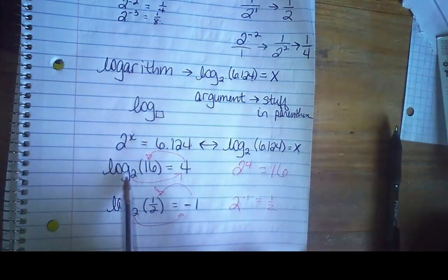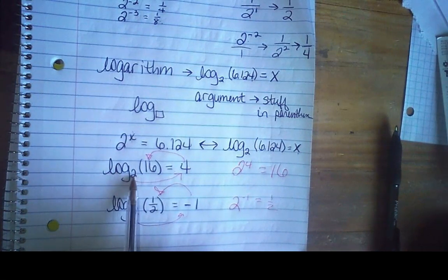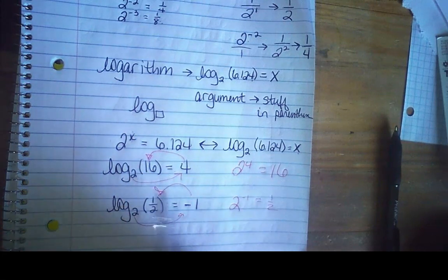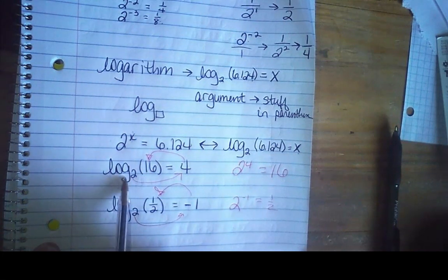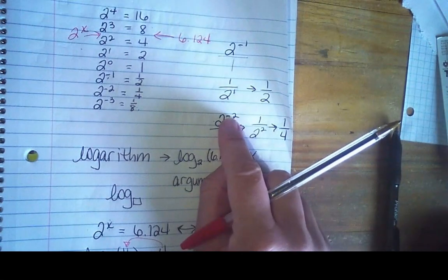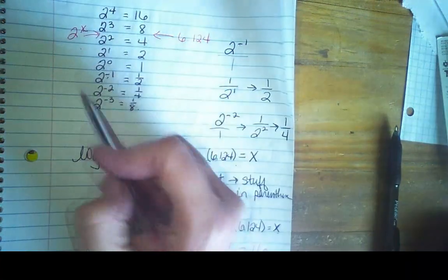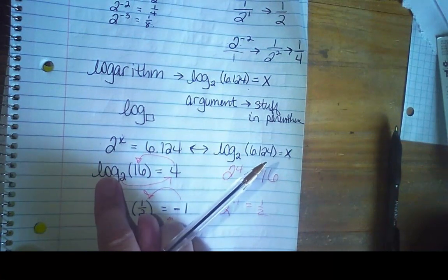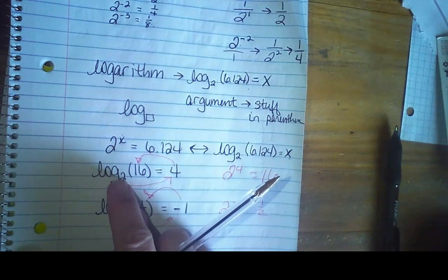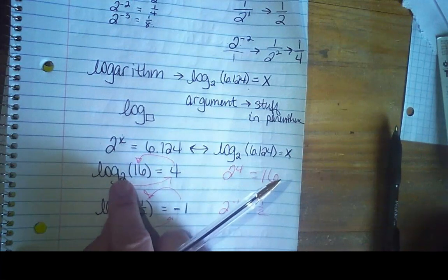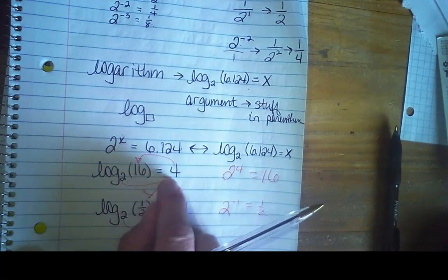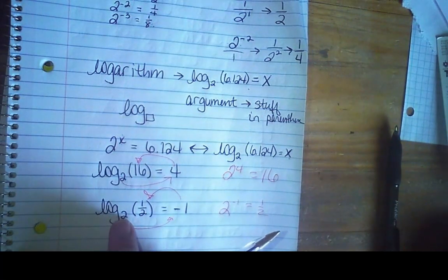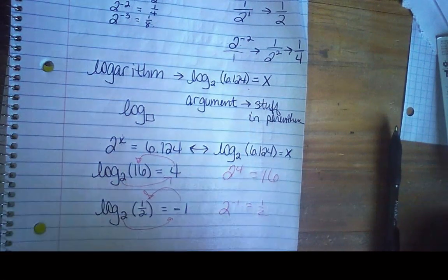A couple other things: this is not log times 2 times 16. This is an operator — it's telling you to do something, just like the negative up here was telling you to do something, just like raising a number to a power is telling you to do something. What this logarithm is saying is: tell me what I raise the base of 2 to in order to get an answer of 16. What power do I use to make 2 into a 16? I use a 4, because 2 to the 4th. What power do I raise 2 to get an answer of 1 half? I raise it to the negative 1 power.